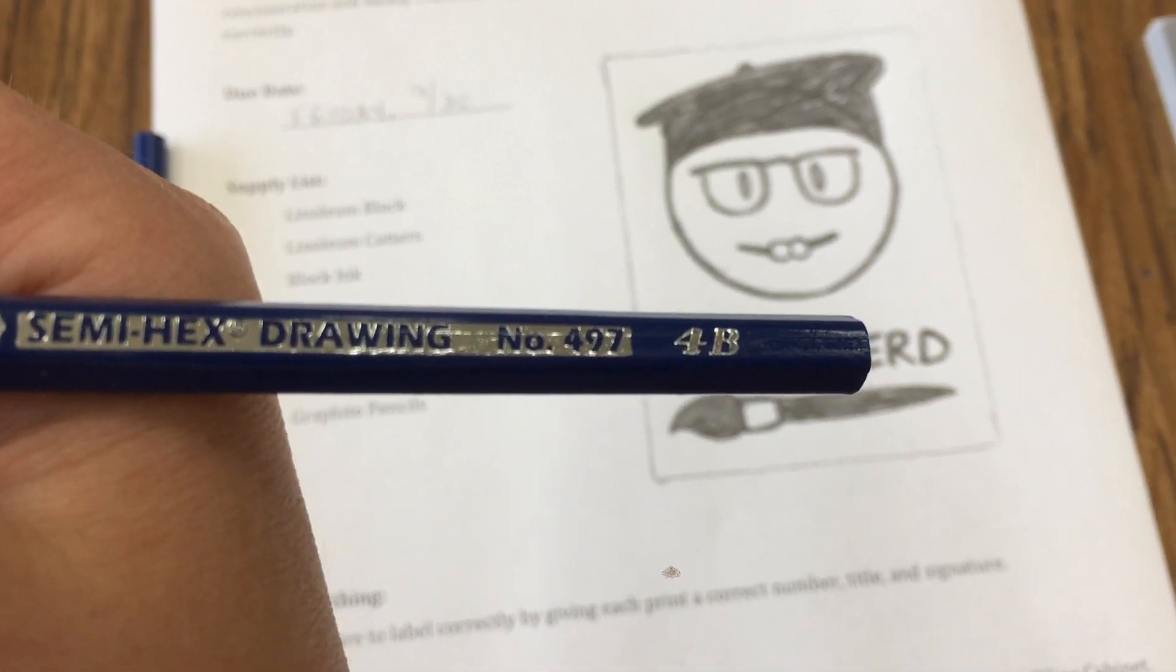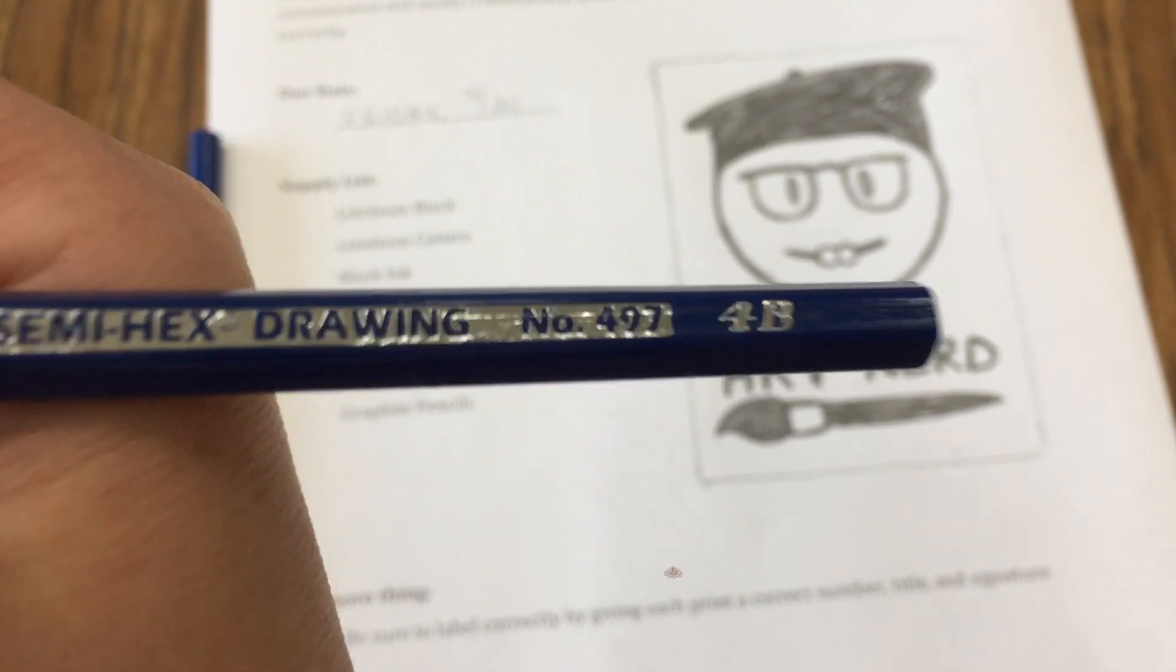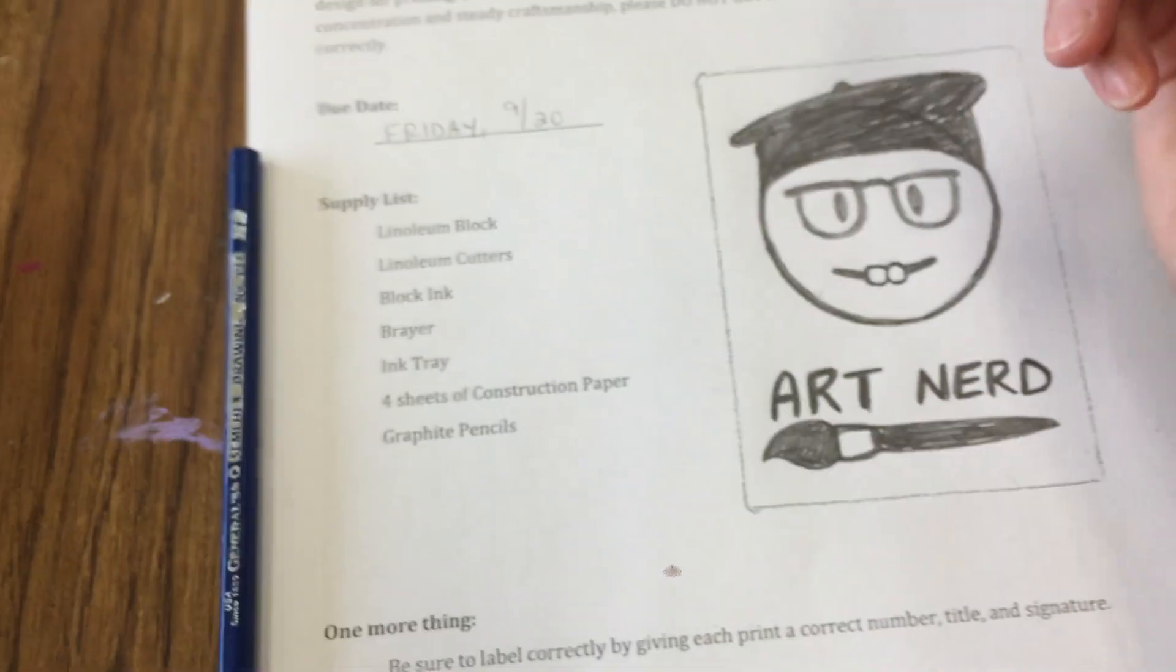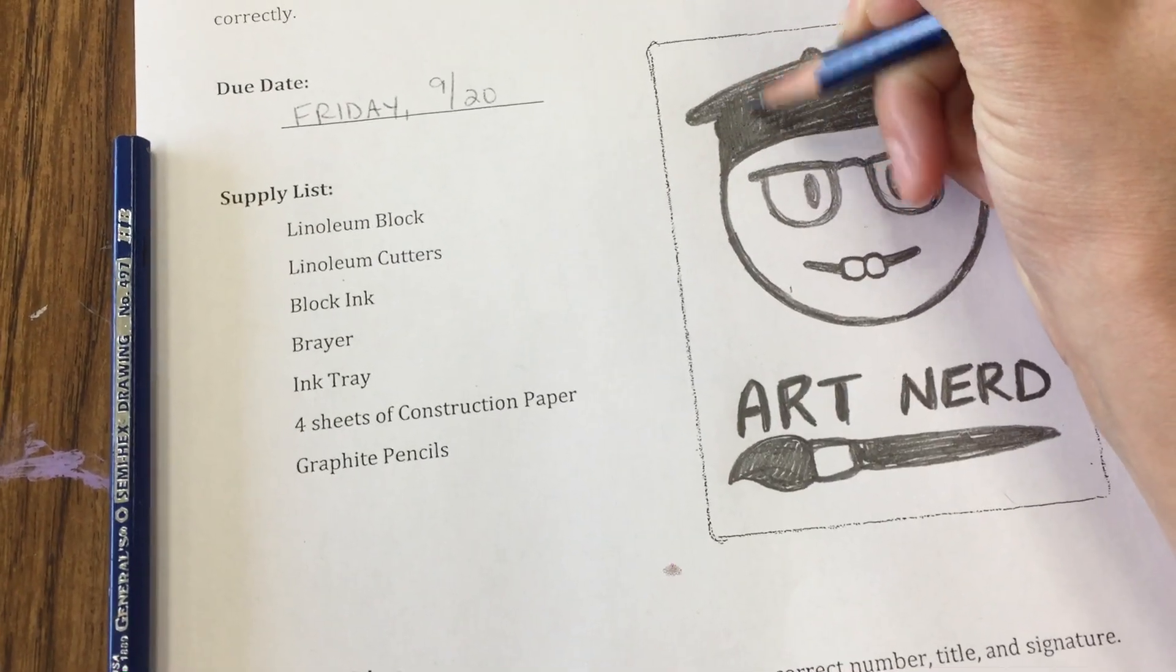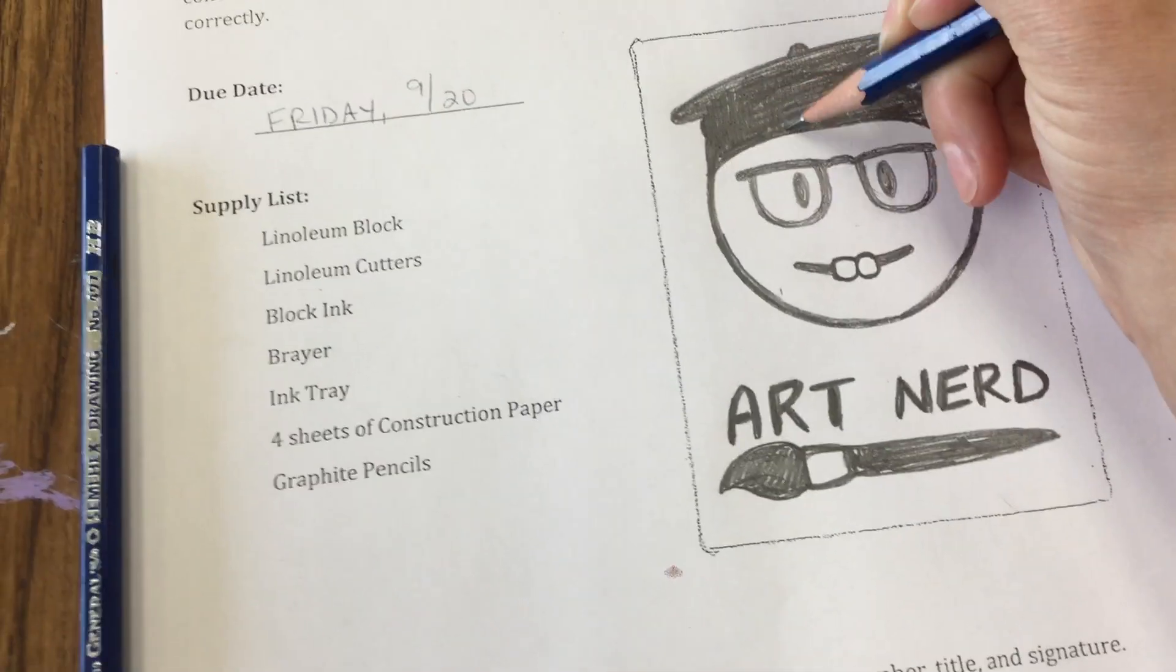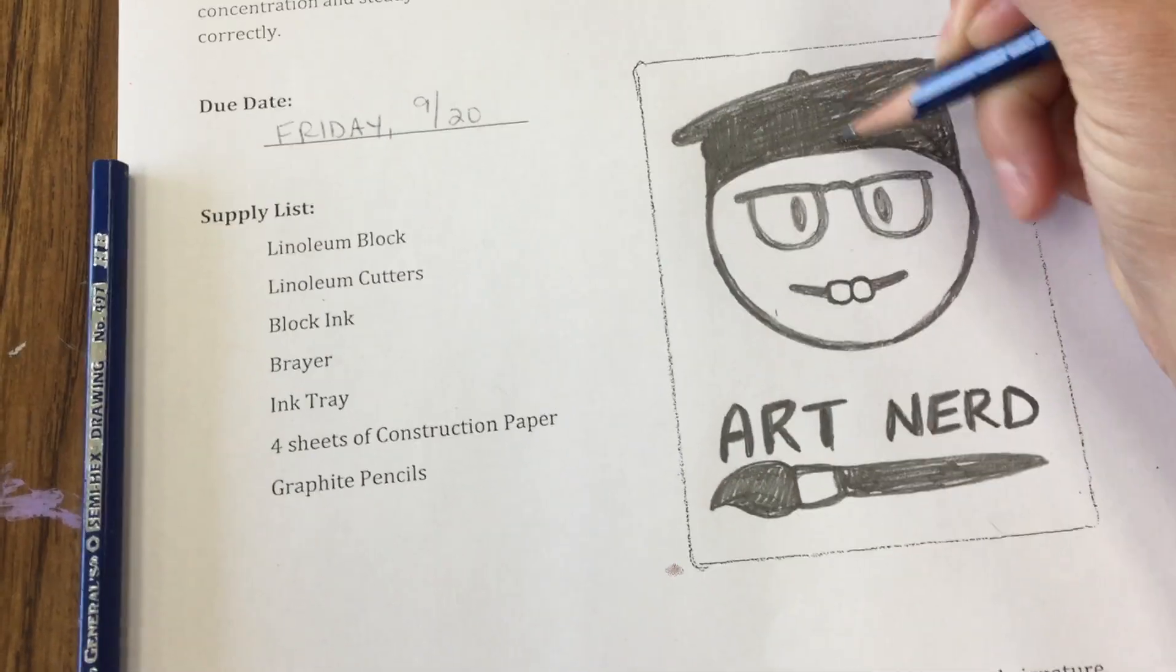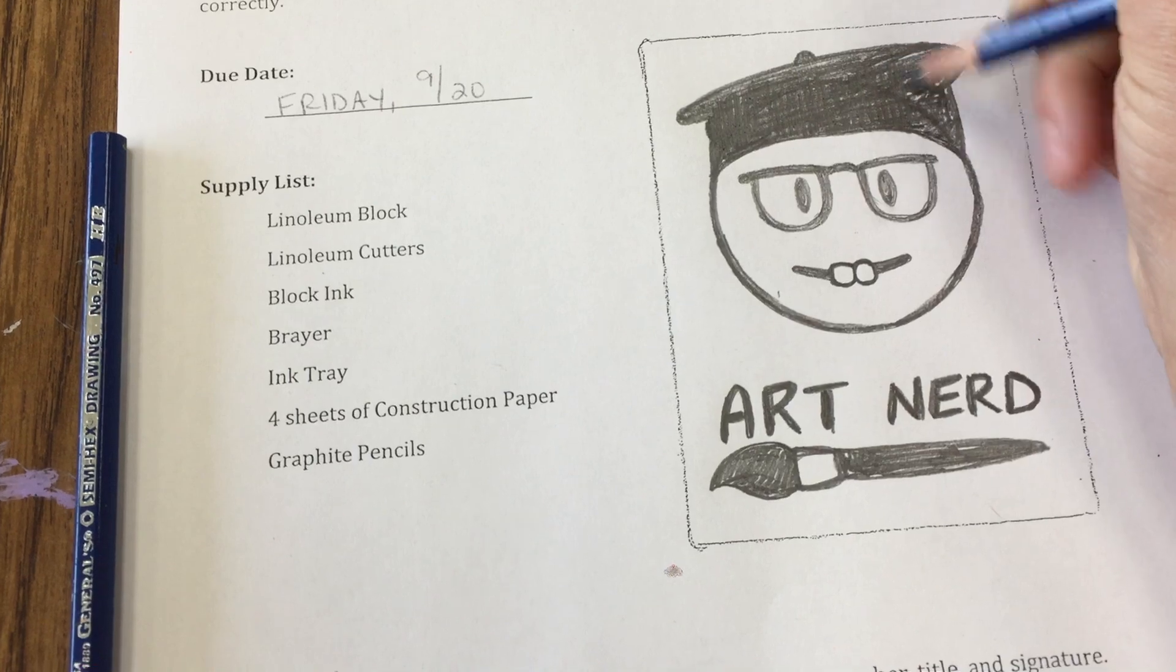You're also going to want to get a 4B or potentially a B, a regular B, a 2B, 4B, 5B, 6B, or 8B, but 4B works. You're going to make sure that there is plenty of graphite in the image.